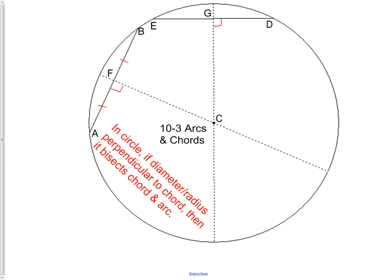The first property we have is, in a circle, if a diameter or a radius is perpendicular to the chord, then it bisects the chord and also the arc.